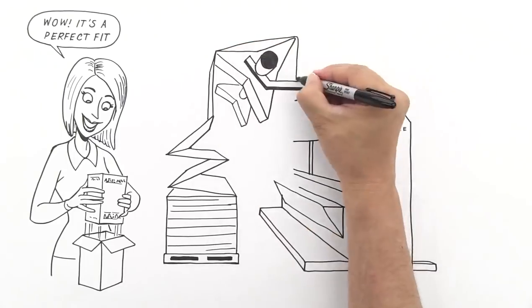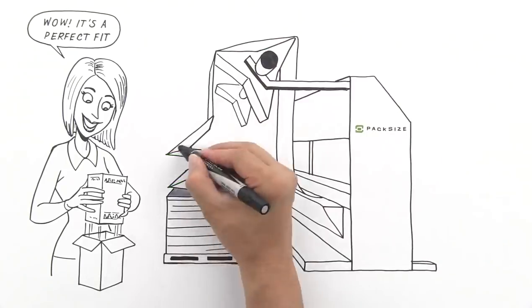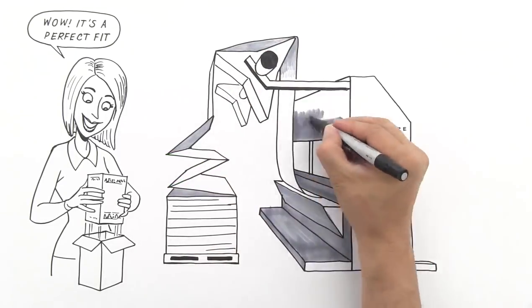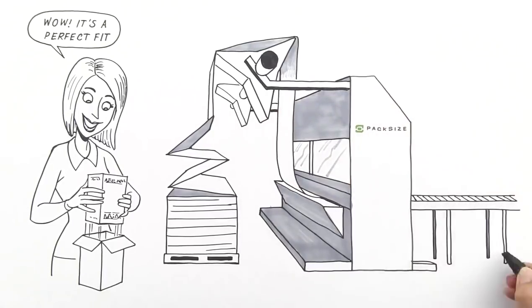The corrugated is connected in one long continuous piece, which we call Z Fold, because it kind of looks like the letter Z. An operator feeds the Z Fold into the machine, which will then cut and fold the corrugated to make a perfectly sized box ready to fit whatever you want to fill it with. Think of it as a high-tech vending machine for boxes.